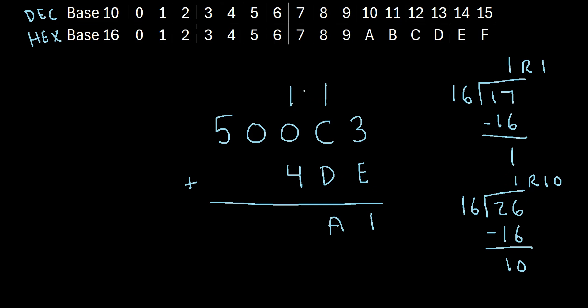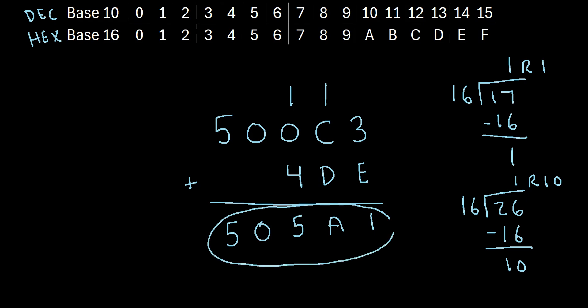In the next column, we get 1 plus 0 plus 4, that's 5. In the next column, we just bring down this 0. And in the last column, we just bring down this 5. So our final answer is 505A1.